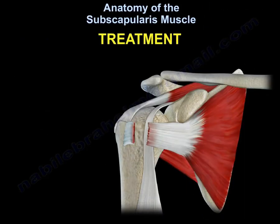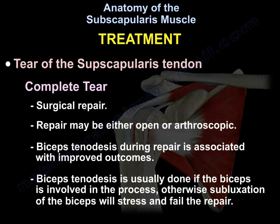Treatment. For a complete tear, surgical repair is indicated. Repair may be either open or arthroscopic. Biceps tenodesis during the repair is associated with improved outcomes and is usually done if the biceps is involved in the process. Otherwise, subluxation of the biceps will stress and fail the subscapularis tendon repair.